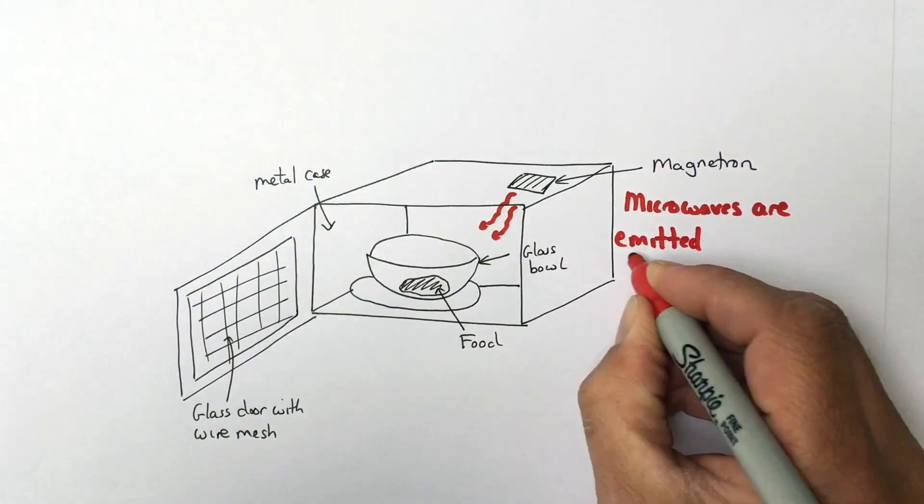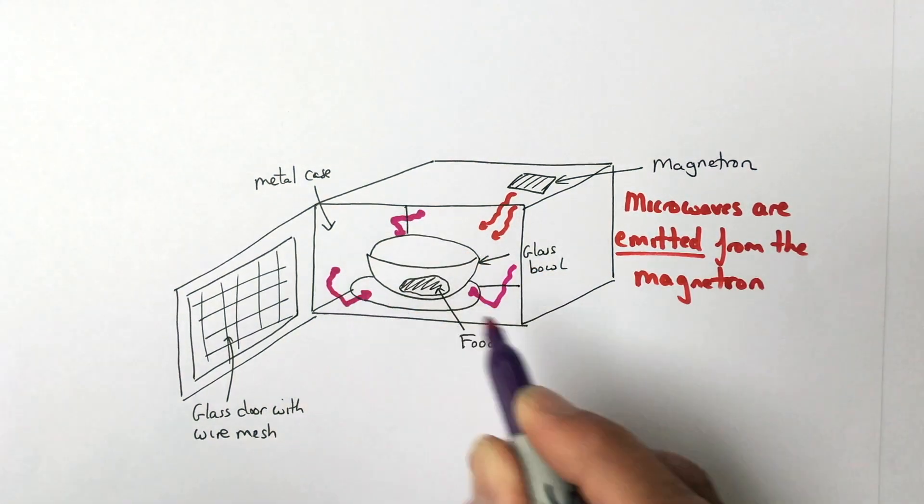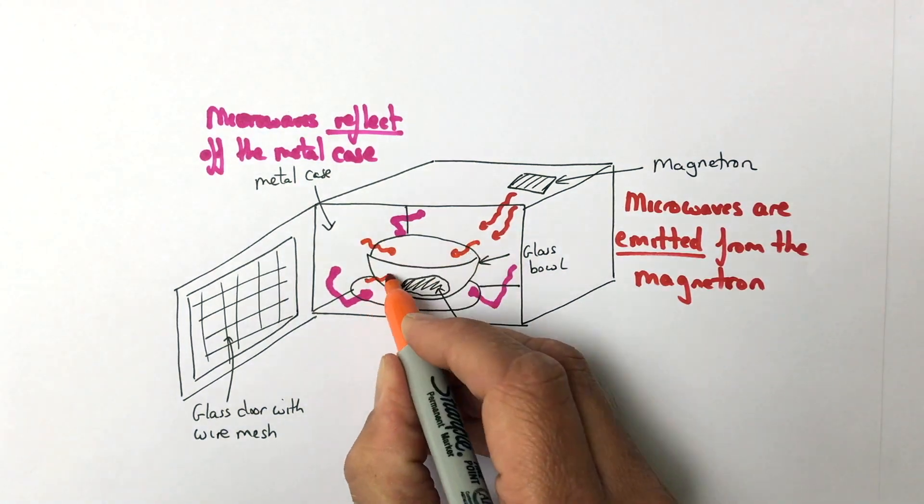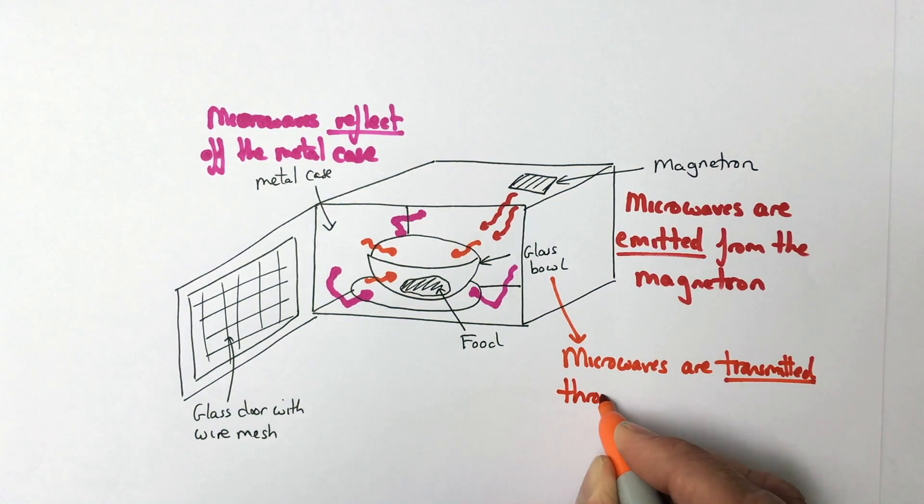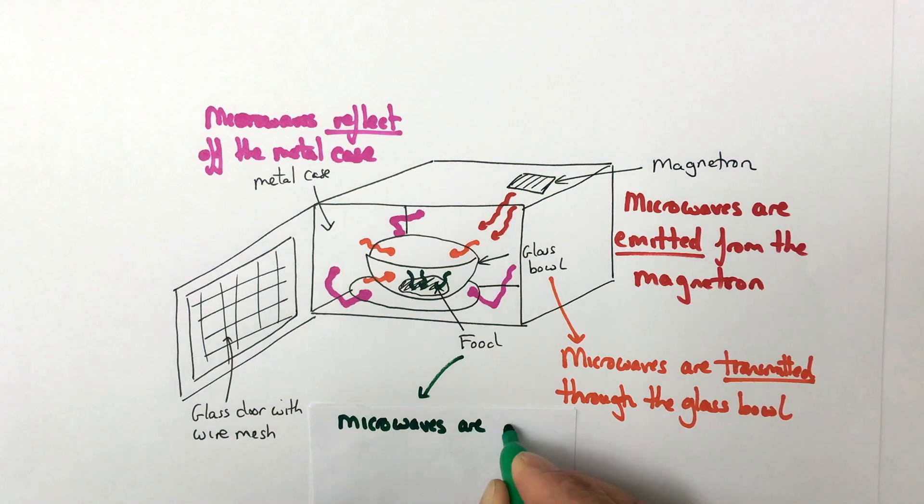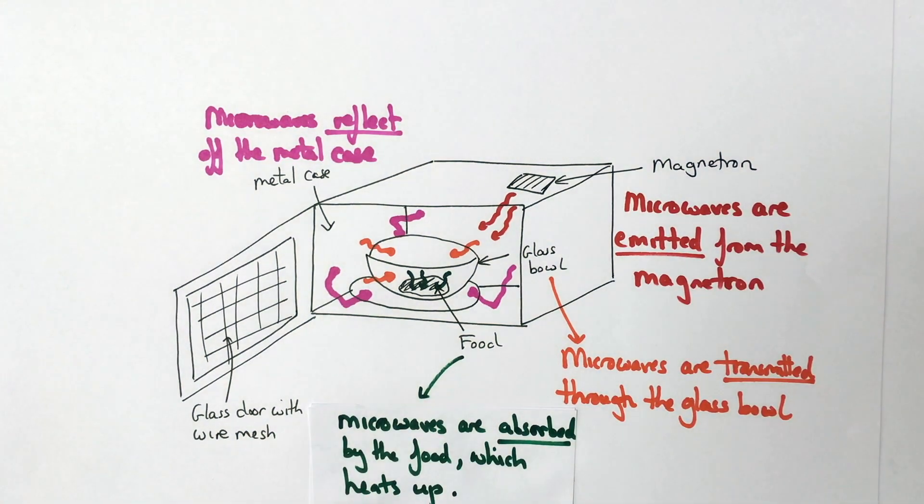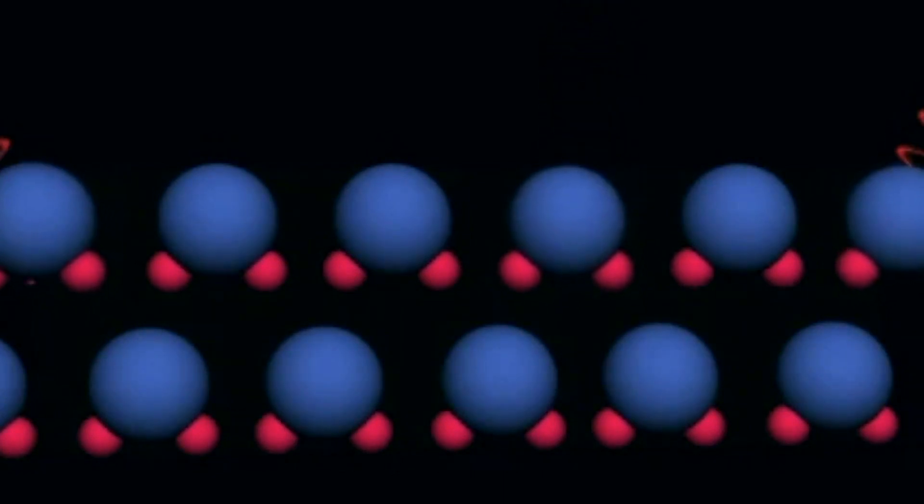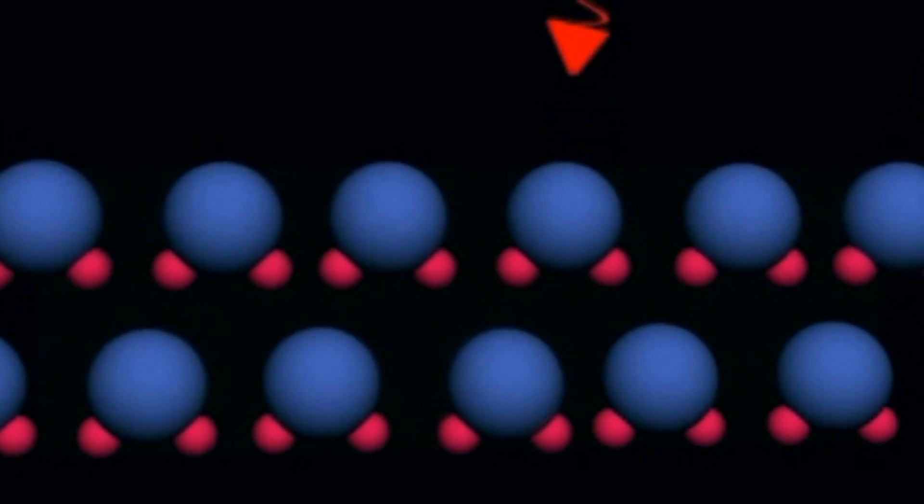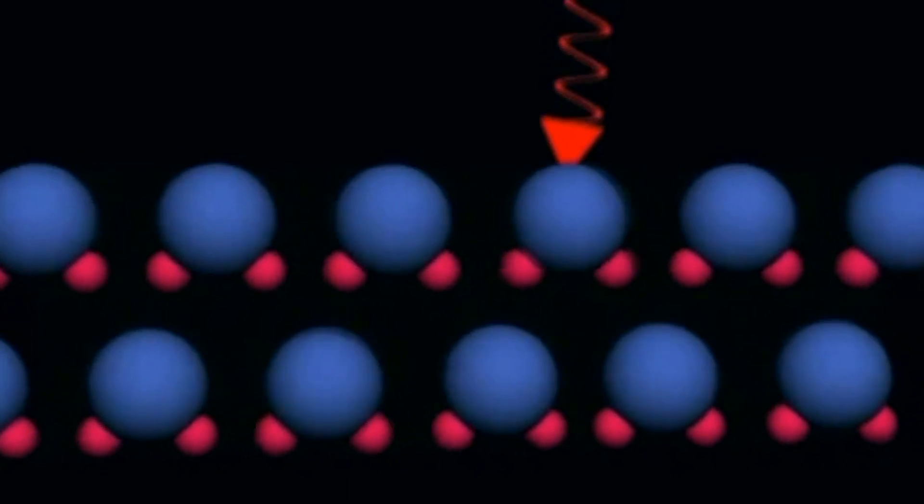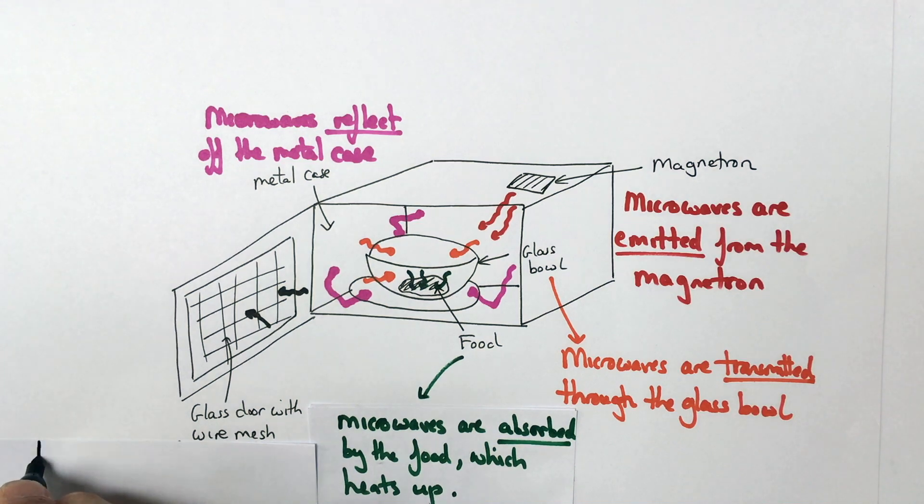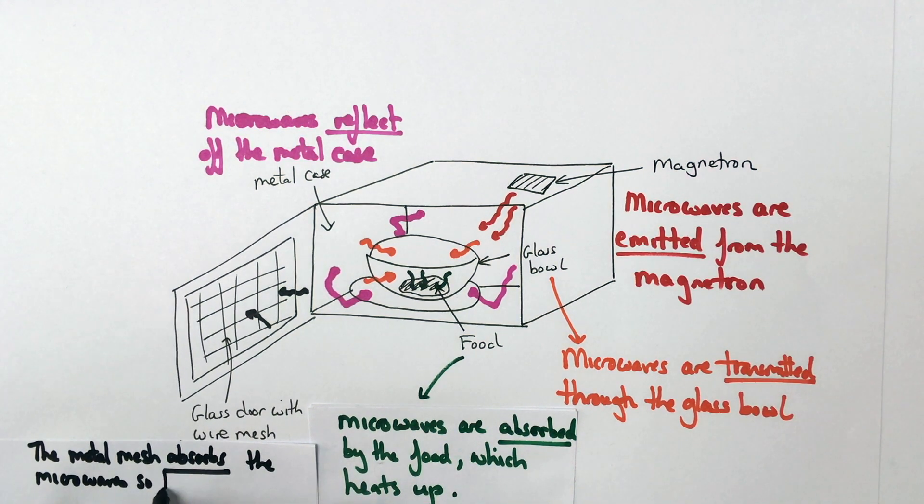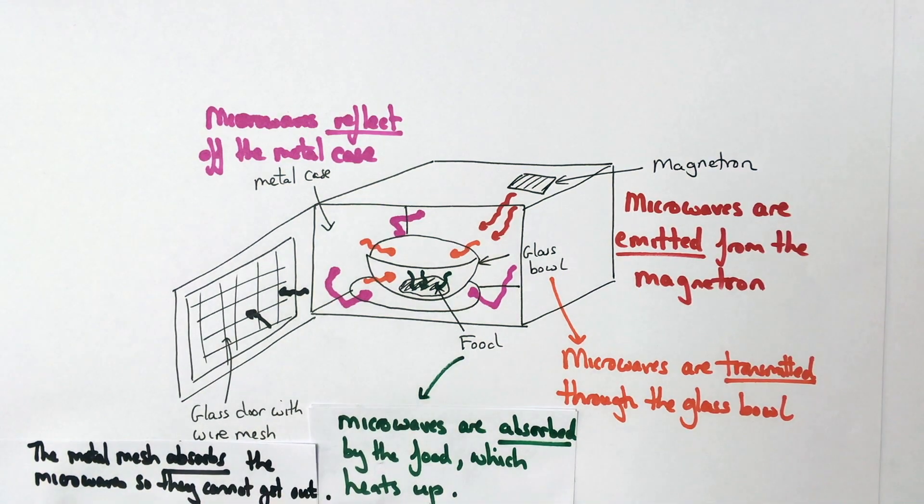The magnetron at the top emits the microwaves. Metals reflect microwaves, that's why the case is made out of metal to reflect them back in so they don't come out and cook us. The glass bowl transmits the microwaves, allows them to pass through into the food. The food then absorbs the microwaves and the food heats up from the inside. All foods contain fat and water molecules and at one particular frequency the water and fat molecules absorb the energy carried by the microwaves. This causes them to vibrate more and so heat up the food from the inside. Finally, microwaves should pass through the glass of the door, but if you look really closely you'll see there's a wire mesh inside the glass and this absorbs the microwaves keeping you safe. What an ingenious design.